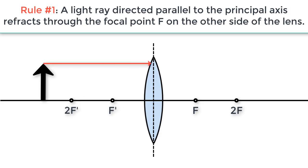Rule number one: a light ray directed parallel to the principal axis refracts through the focal point F on the other side of the lens.